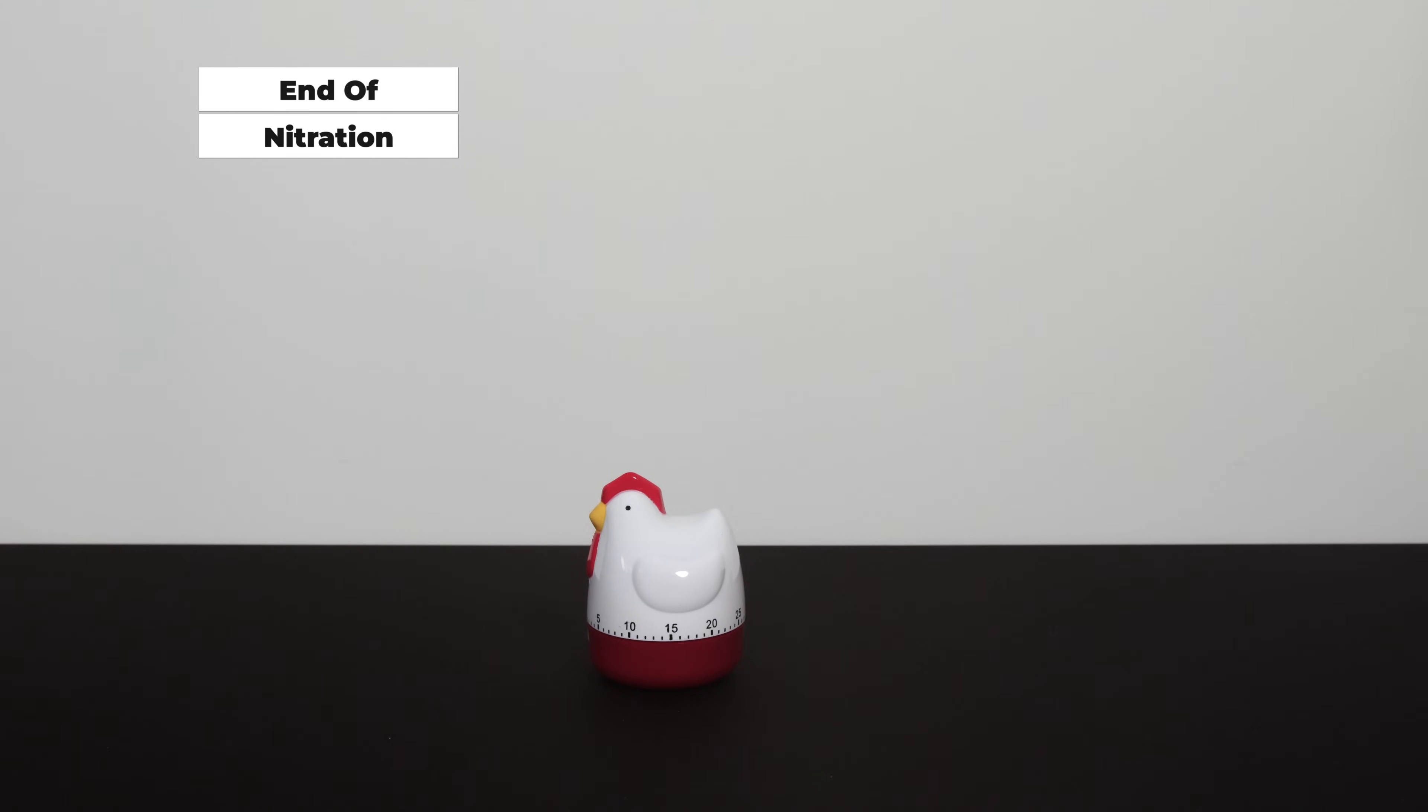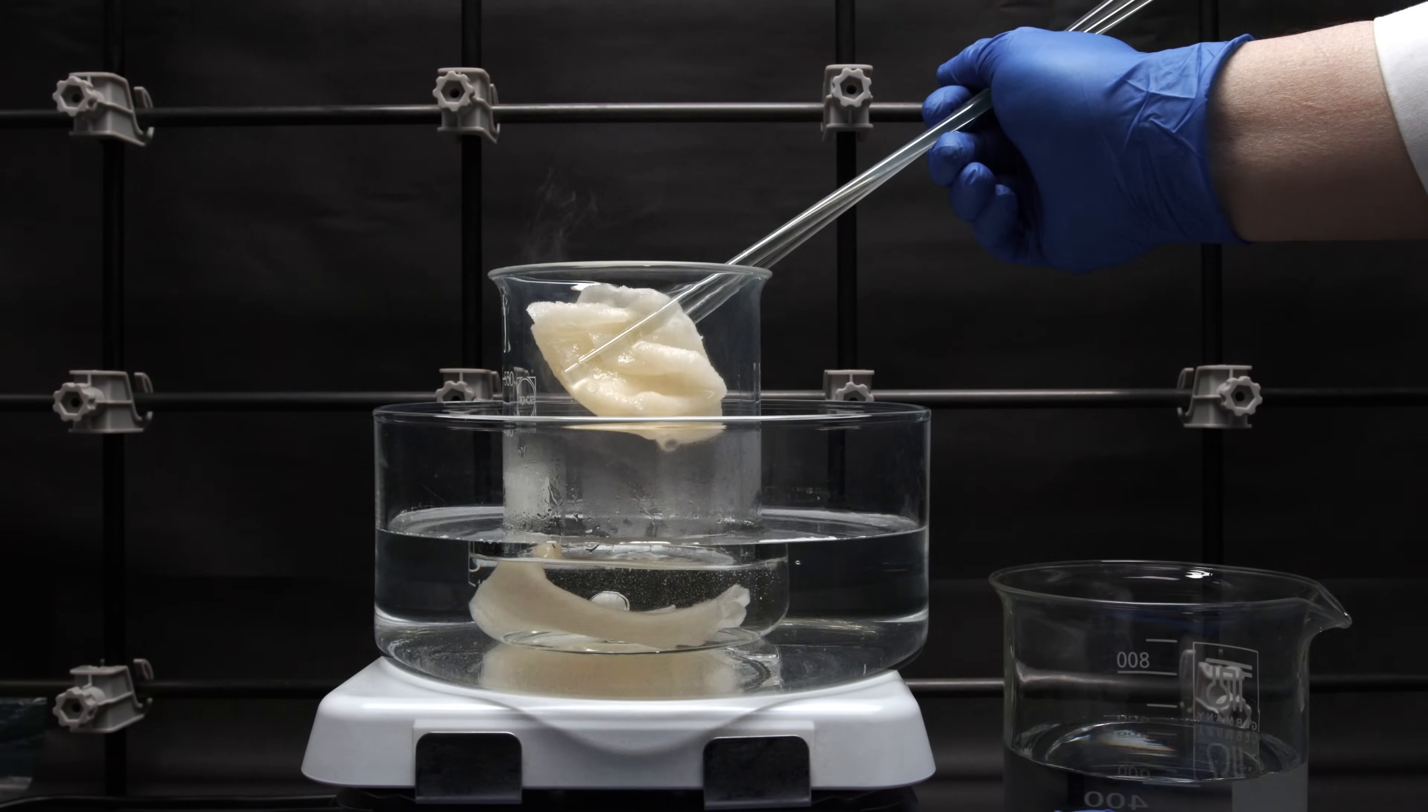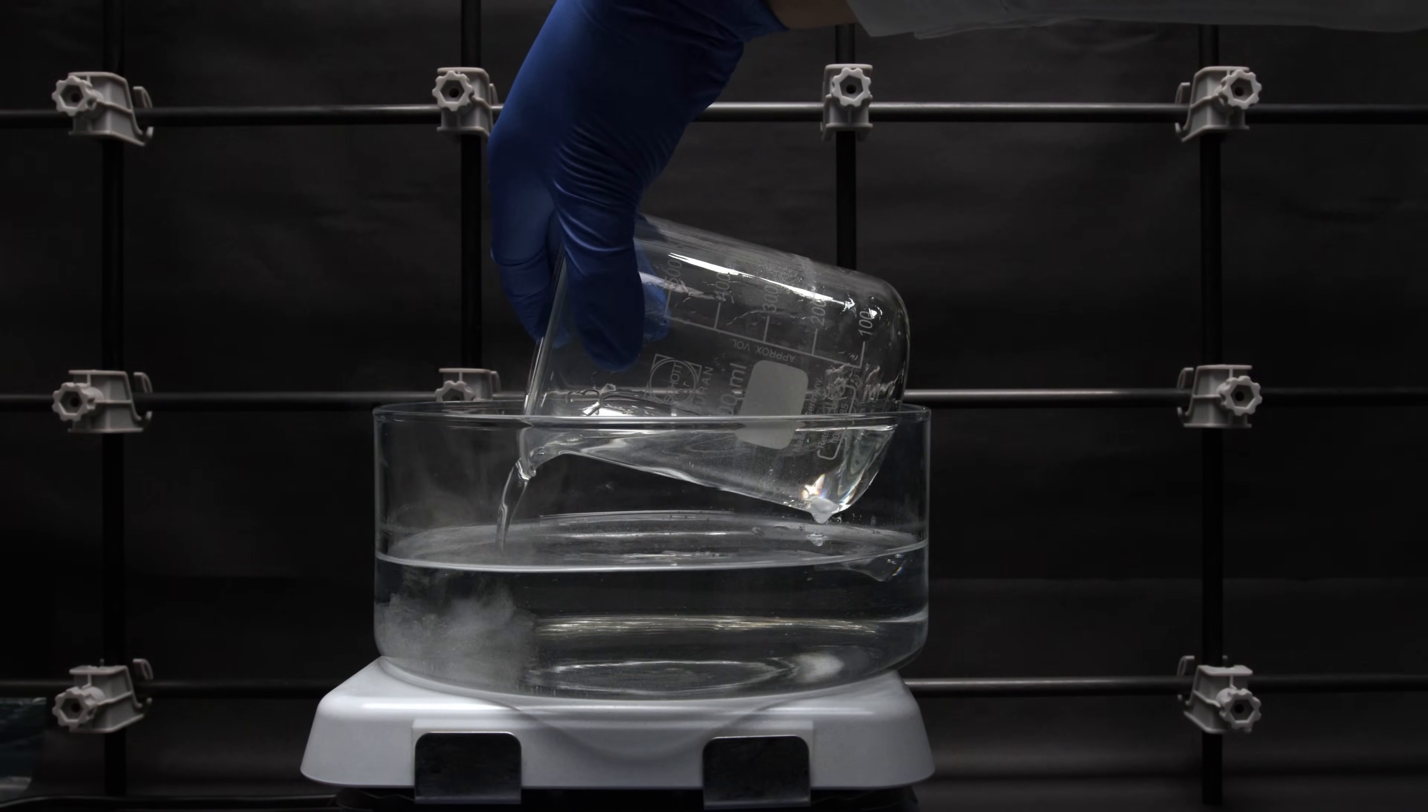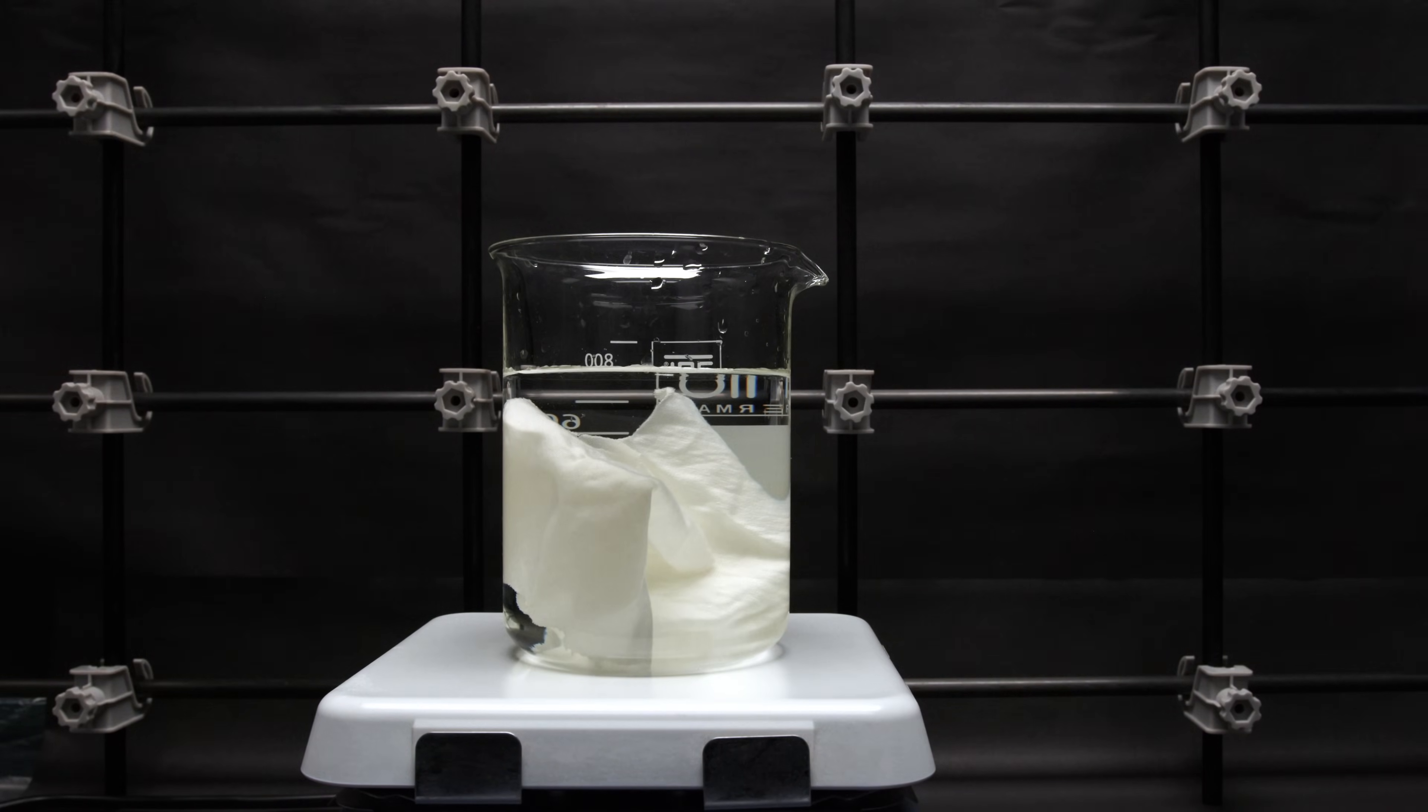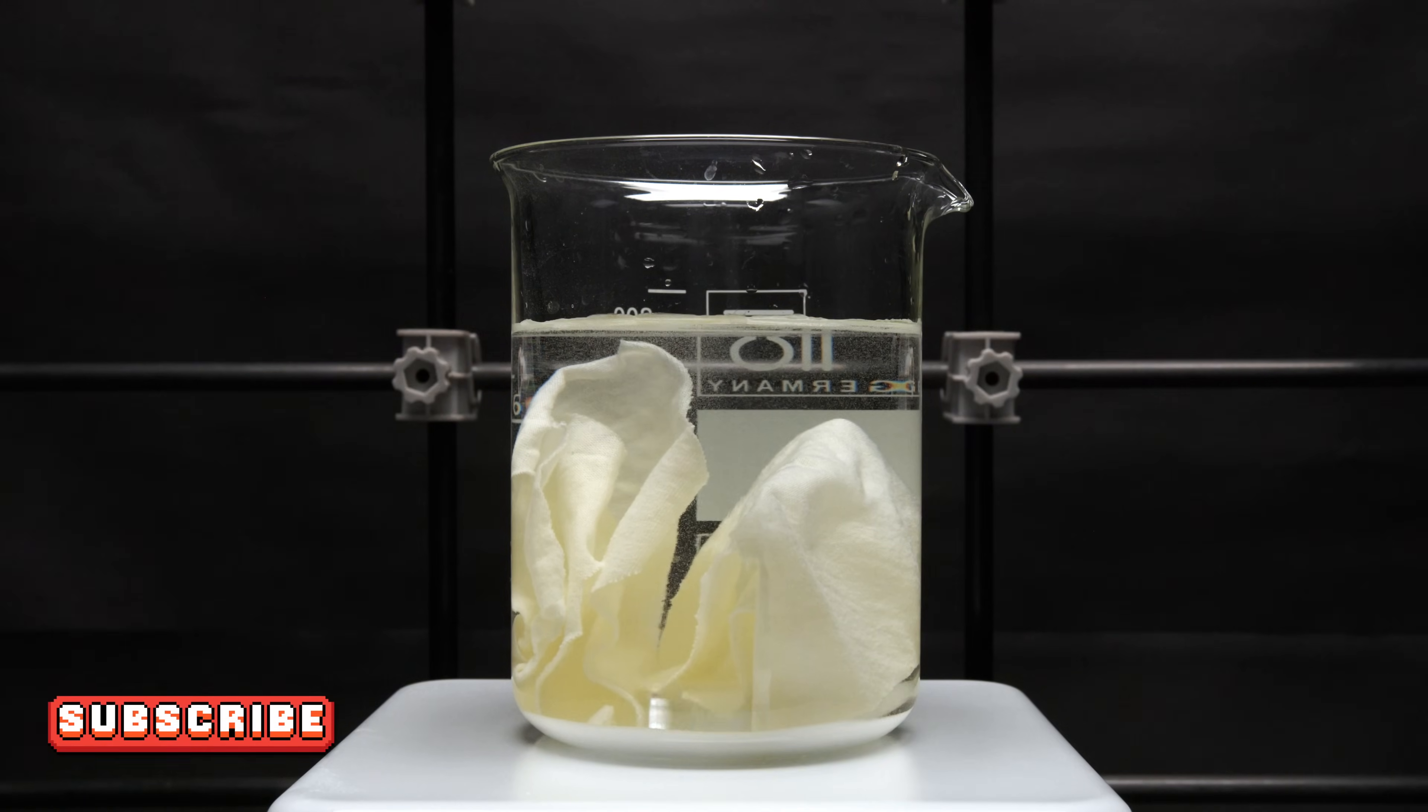Okay, enough of story time. Let's get back to the experiment. And by this time, the nitration should be completed. Carefully remove the panties, add them to the water to quench the reaction, and slowly pour the acid mix to the ice bath. The panties is first rinsed with running tap water for 5 minutes. It's then rinsed with bicarbonate solution to neutralize the acid until no noticeable reaction is observed. Then proceed to rinse 5 more minutes with running tap water.